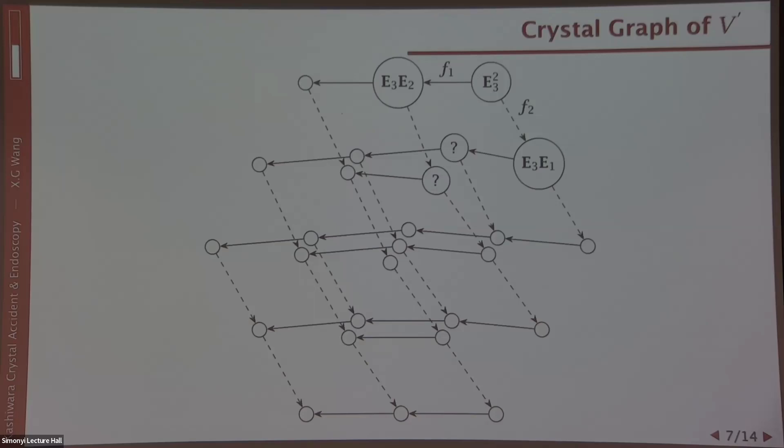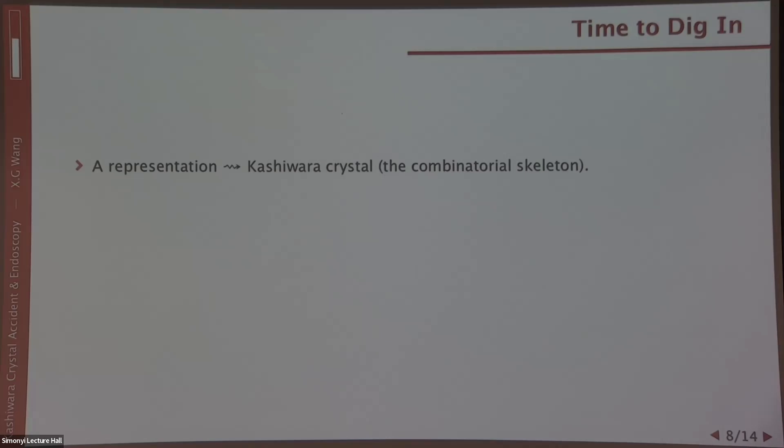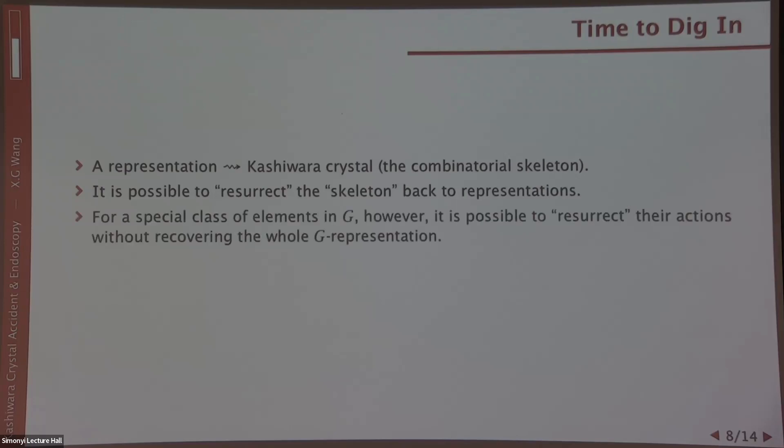Okay, so now we have two Kashiwara crystals. It's time to dig in. Let me remind, we found a representation, we showed that you can extract some combinatorial essence from the representation, which is the Kashiwara crystal. In fact, there is also a way to go backwards to resurrect the skeleton back into flesh and blood to get your representation back. It can be done through quantum groups, as someone mentioned yesterday, but we'll not do that. It's more involved and it's not needed. Instead, we only look at the action of a special class of elements in the group G. For these elements, it's possible to recover the action without recovering the whole representation. This partial resurrection will have huge significance in number theory.